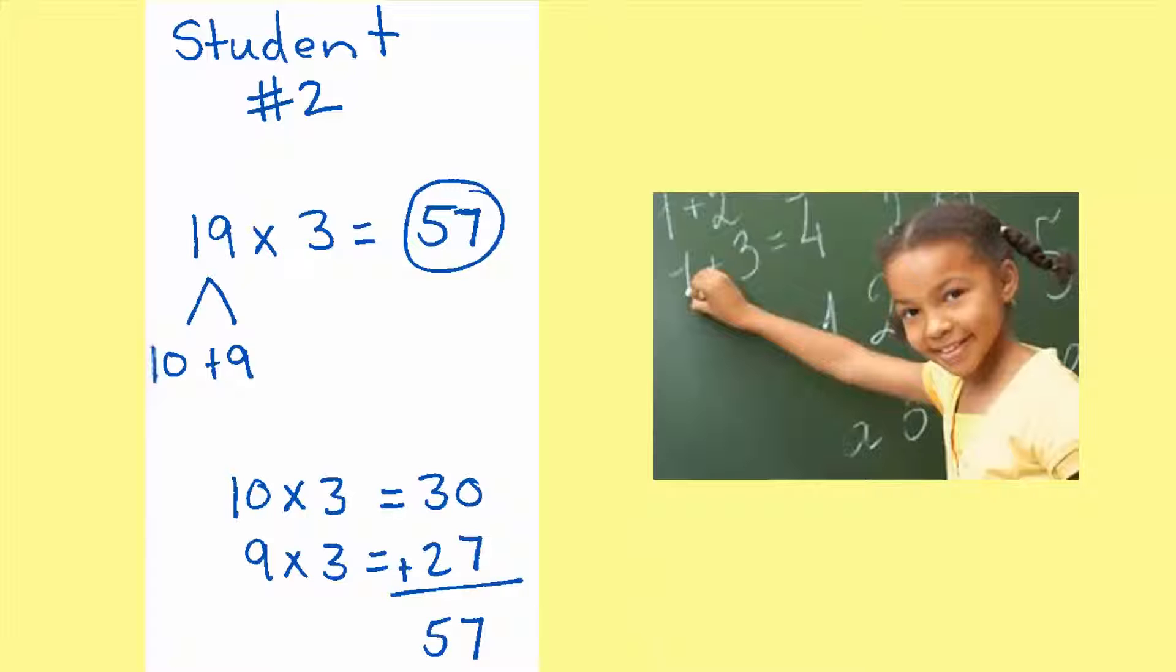Now take a second and look at student number two. Are they fluent? Student number two is using a place value skill by breaking up 19 into its expanded form of 10 plus 9, and then multiplying those by three and putting them back together to get the product of 57.